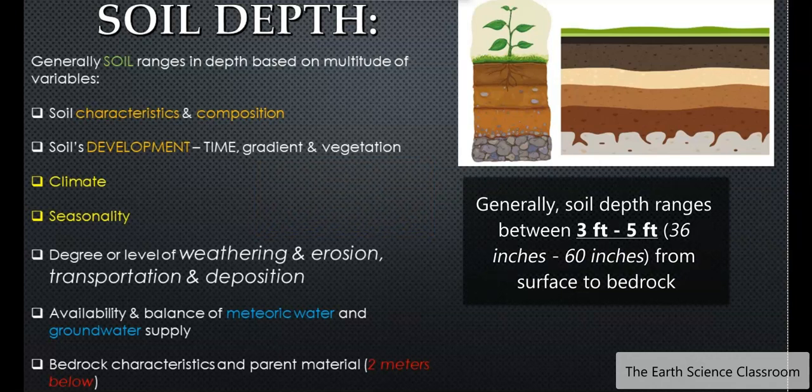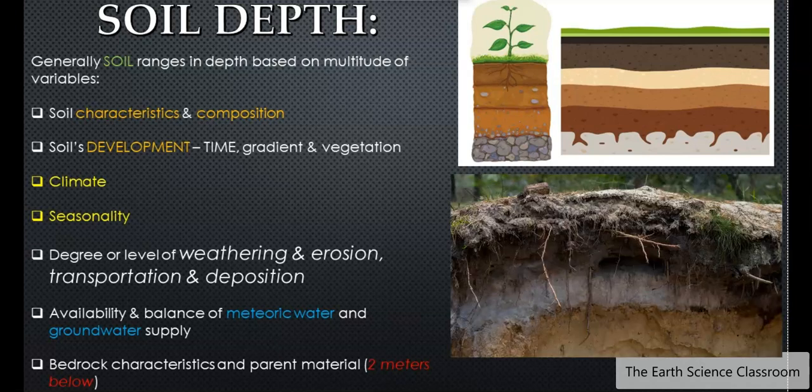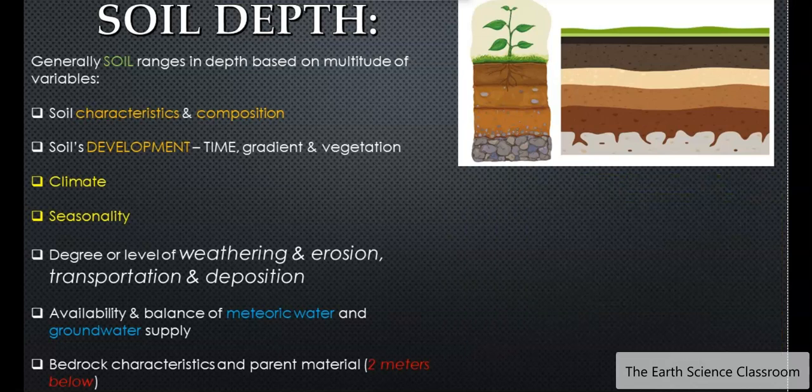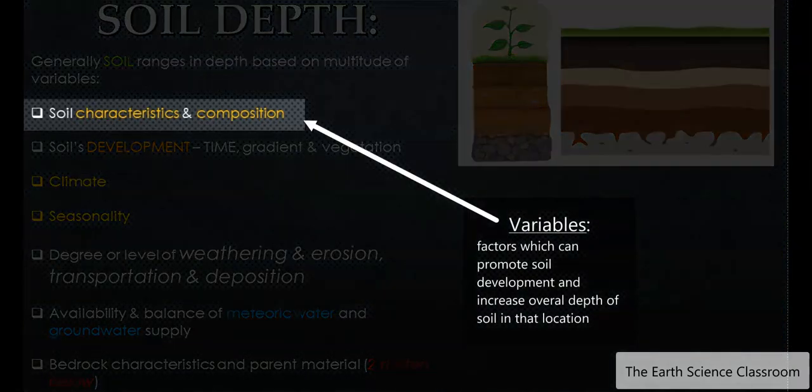Now soil is between three to five feet deep generally, which is 36 inches down to about 60 inches. Now you can get thicker soil and deeper soil, but it depends on the location and generally between three to five. Again, you can have very thin soil. Again, it comes down to the area and location that you find it in, because each location can be different based on a multitude of variables, such as the soil's characteristics and compositions.